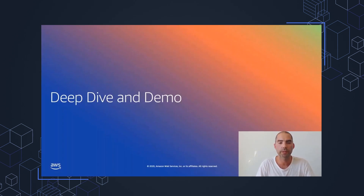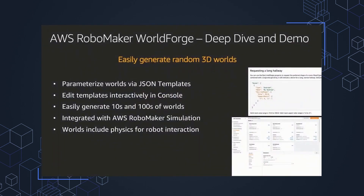Hi, I'm Sam Gundry, an engineer with RoboMaker. Today we're going to do a deep dive and a demo of WorldForge. Afterwards, we'll look at WorldForge under the hood and how it's being implemented. AWS RoboMaker WorldForge is based on templates. The templates are JSON. We have an interactive template editor in the AWS console. You can use the console to create and customize your worlds and then easily generate tens and hundreds of worlds. It's integrated first class with AWS RoboMaker simulation, and the worlds are fully physical. Today I'll walk you through a demo of editing templates, generating worlds, and running in RoboMaker simulation.